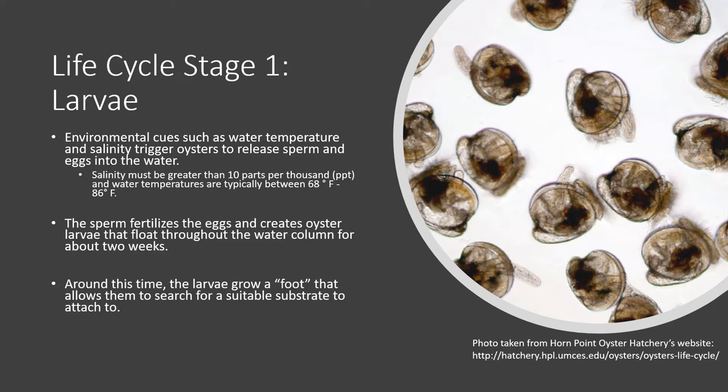These microscopic larvae float through the water column for two weeks before developing what we call a foot. The foot allows the oyster larvae to search for a suitable substrate to attach to. Once the foot is developed, the larvae has roughly one week to find a substrate to attach to. During its search for a permanent home, the oyster larvae may attach and detach itself from substrate that is considered unsuitable.